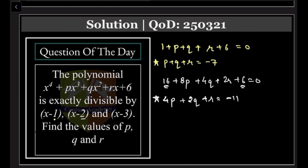Okay sure. And when I am putting 3, I am getting a headache, right? I am like, okay, 81 + 27P + 9Q + 3R + 6 = 0. So 81 + 6 is 87, and then taking 3 common also, so I have star marked 9P + 3Q + R = -29. Yes? Equation 3.